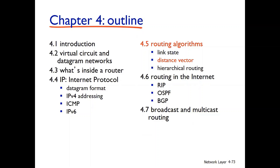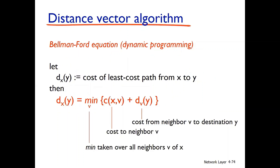Hello everyone. This is the Distance Vector Routing algorithm. It is a distributed, asynchronous, and iterative algorithm. The main concept is that each node knows only its neighbor information — not all information like in the link state algorithm. Based on the neighbor information, we get the least cost from the source node to all other nodes in the network.